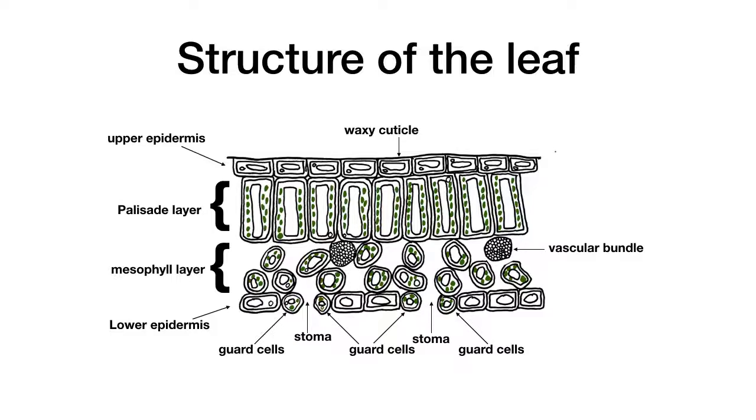The spongy mesophyll layer is under the palisade layer and is deliberately less dense as it is optimized for the free movement of gases, which are vital for the functioning of the leaf.